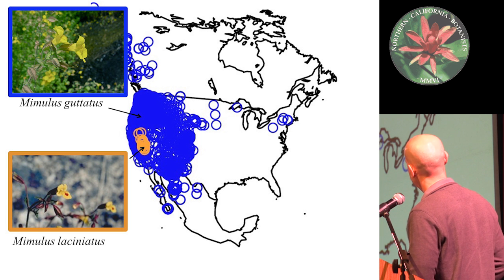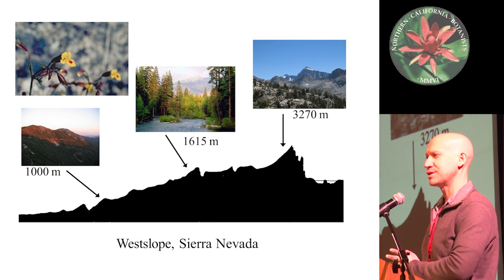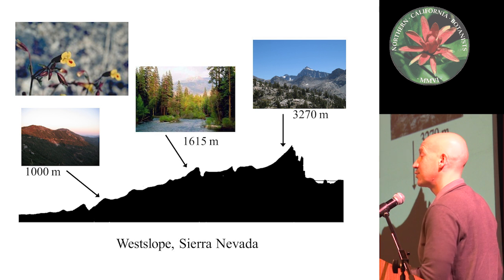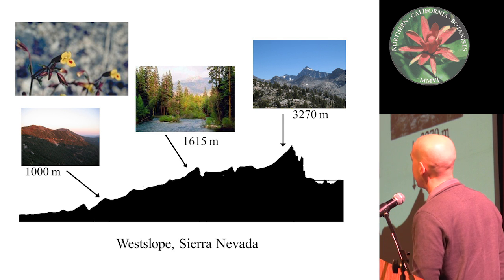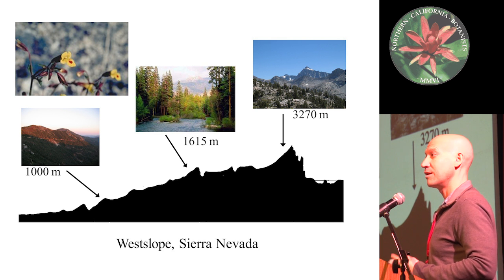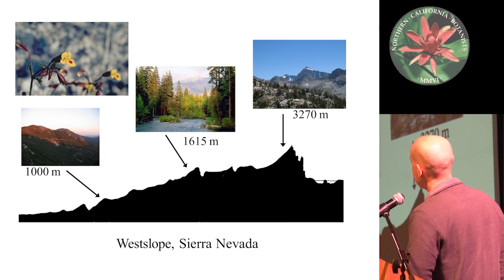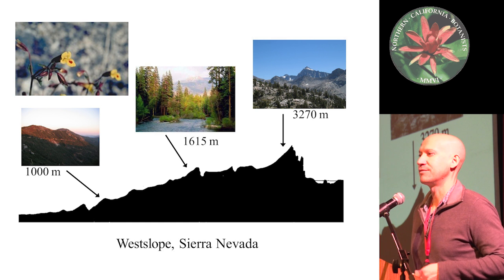Its ecological distribution in the west slope of the Sierra shows that for a range-restricted plant — an endemic to California — it occupies a really wide breadth of environmental variation. You can find it growing in chaparral and seeps near a thousand meters through mixed coniferous zones and mixed montane forest, all the way up to some alpine environments.